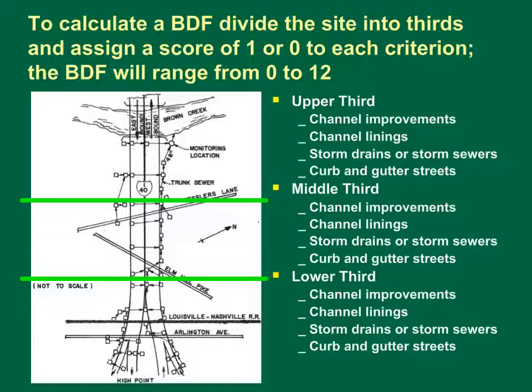At this site, we have channel improvements and channel linings, concrete pipes, which are storm sewers draining curb and gutter streets in each third of the basin. The green line shows the approximate location of dividing lines for each third of the basin. Therefore, each criterion would be scored with a 1 and the BDF would be 12 for this drainage system. One would expect a quick response to rainfall and a short basin lag time at this type of highway site.